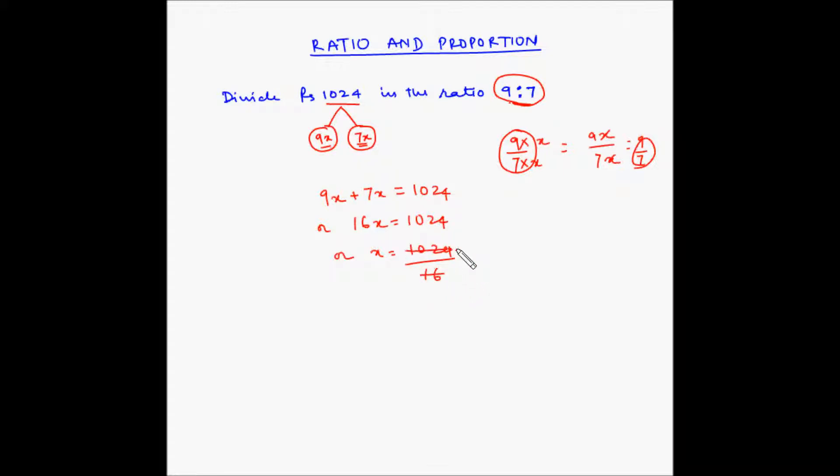Now, 16, 6s are 96. 102 minus 96 is 6, 6 carry over, 64 divided by 16 is 4. So x is 64.